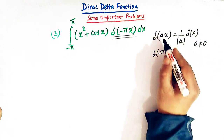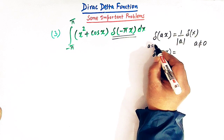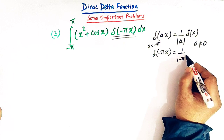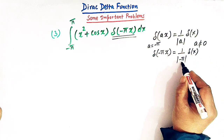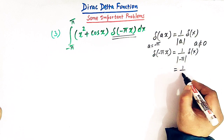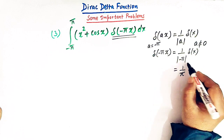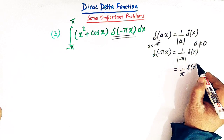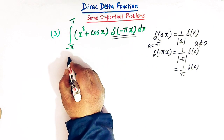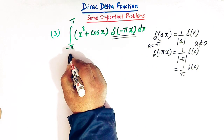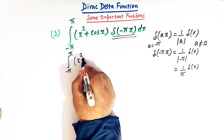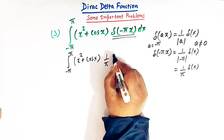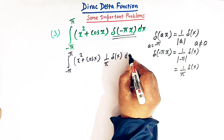Here a is minus pi, so we have one over the modulus of minus pi times delta of x. The modulus of minus pi is pi, so we have one over pi times delta of x. The absolute value function makes it positive. So this integral can be written as the integral from minus pi to pi of (x squared plus cos x) times one over pi times delta of x dx.